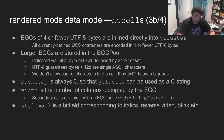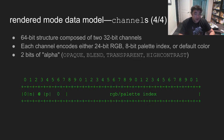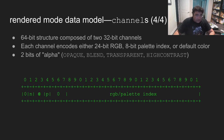The last data structure essential to understanding and using NotCurses is the channel. Channels usually come in pairs — two 32-bit channels in a 64-bit structure. Each channel encodes at a given time either 24-bit RGB, 8-bit palette index, or the fact that it's a default color. There are also two bits of alpha — which is actually opaque, blend, transparent, or high contrast. There are four reserved bits marked as zero in this diagram; those are used by internal NotCurses bookkeeping for optimization.